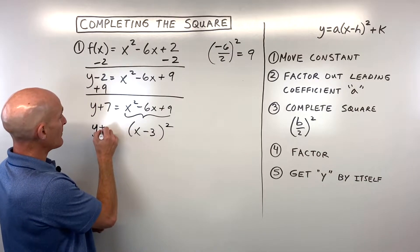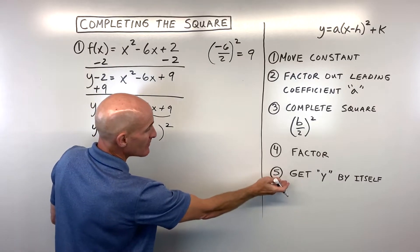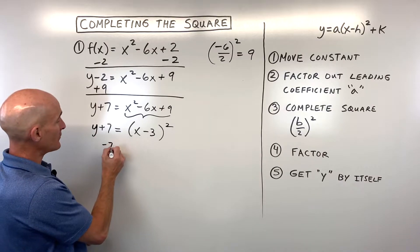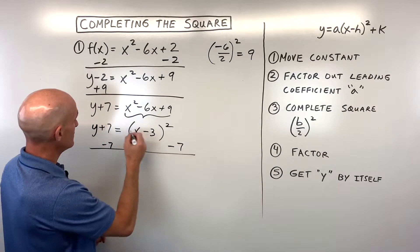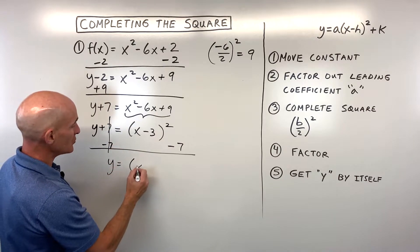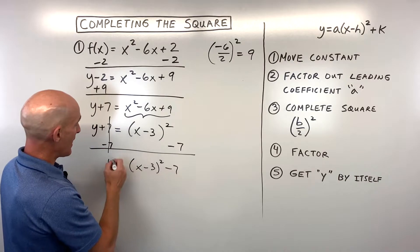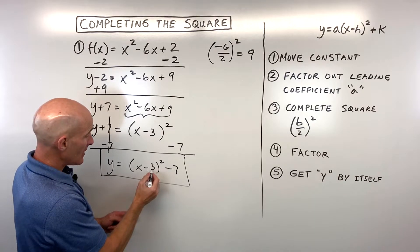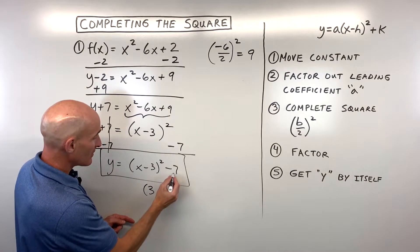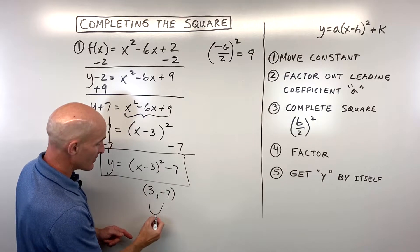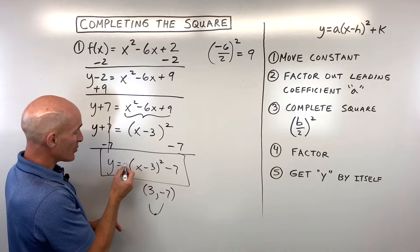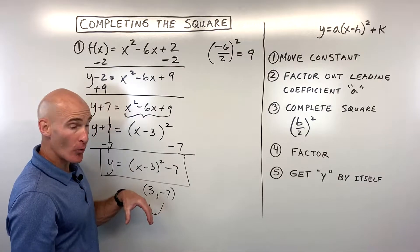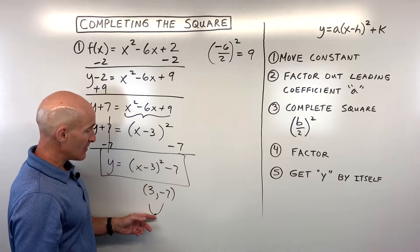Now we're down to y plus seven equals x minus three squared. The last step is to get y by itself, so we subtract seven from both sides. That gives us y equals the quantity x minus three squared minus seven — that's in vertex form. The vertex is at positive three, negative seven. The a value is understood to be one; since it's positive, the parabola is opening up.